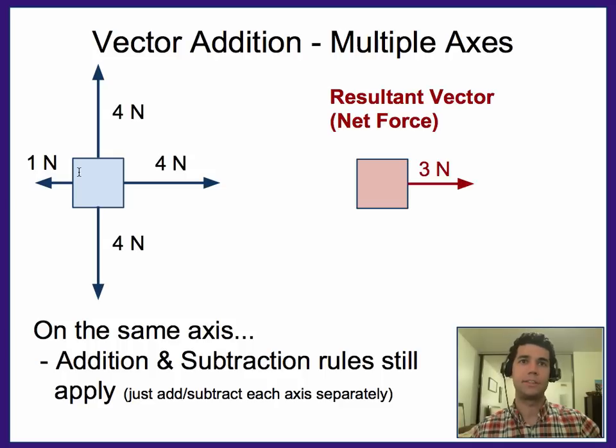So in this case we get that the resultant vector, resultant force, is going to be just three because these two cancel out and these only partially cancel out, so it will be to the right.